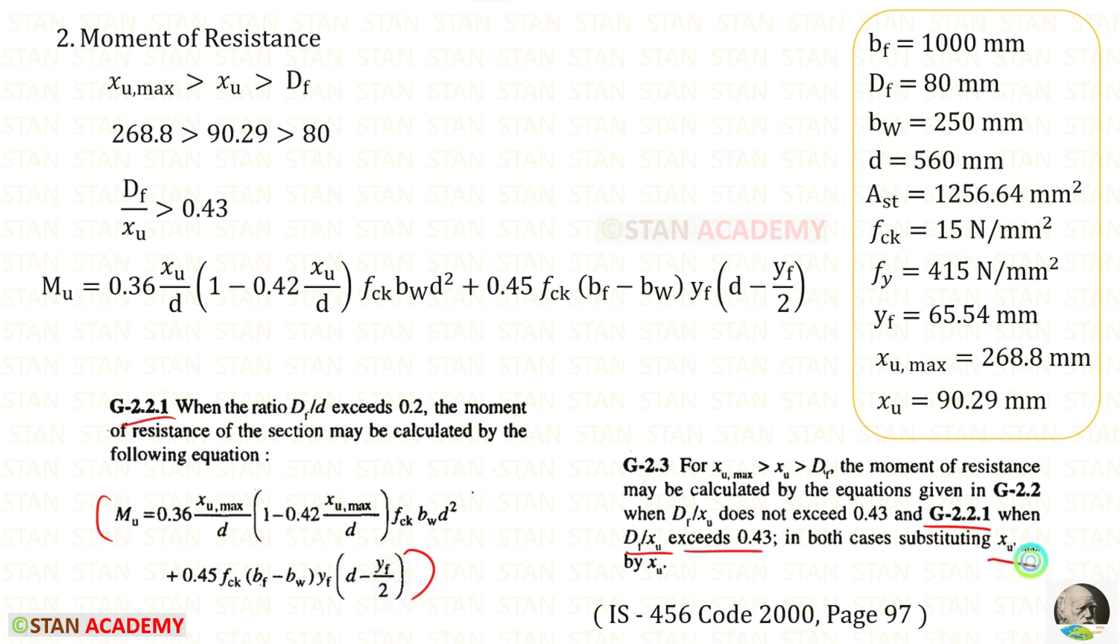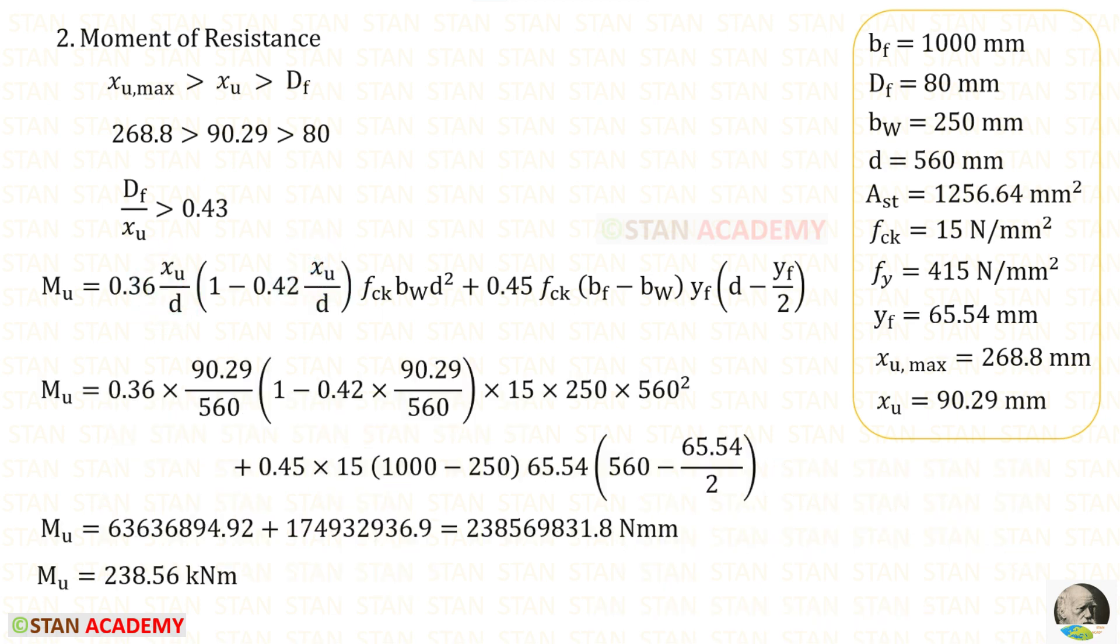Here, instead of xu max, we have to apply xu. You can see that I have applied xu. In this one, we can apply all of the values so that we will get this. We can divide this by 10 power 6 so that we will get the value in kilonewton meter.